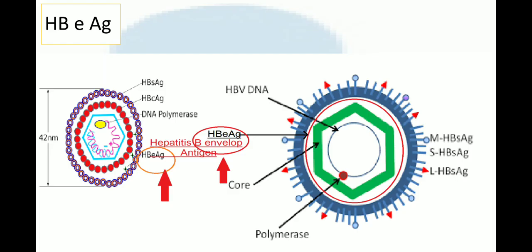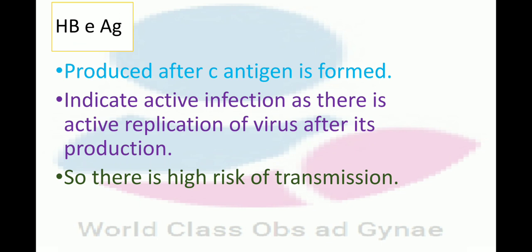Coming to the third antigen, that is HBe antigen. You can see outside that green core, we have a red circular line that is basically a sort of envelope around the core. So HBe antigen is hepatitis B envelope antigen. HBe antigen is produced after C antigen is formed and it indicates active infection, as there is active replication of the virus after its production. So if E antigen is positive, it indicates a high risk of transmission.